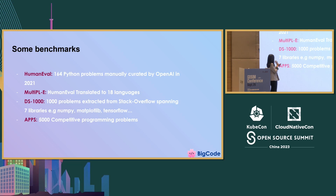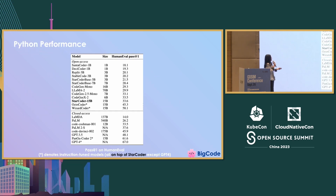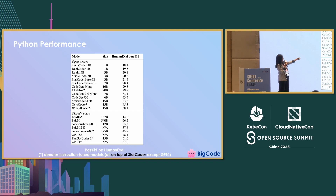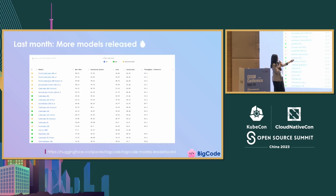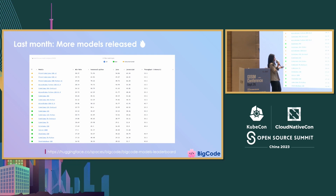Other benchmarks include MultiPL-E, which has a lot of programming languages, DS-1000 which is on Python with a lot of libraries, and APPS. This is a table showing the performance of StarCoder compared to other models. Until about a month ago, it was the best open source model. WizardCoder and OctoCoder are based on StarCoder — they are fine-tuned versions so they improved on it. This is a leaderboard we released to compare code models. Recently, Meta released CodeLLaMA, which is also a very strong code model, and some people instruction-tuned it. So now there's StarCoder but also a lot of other nice alternatives.